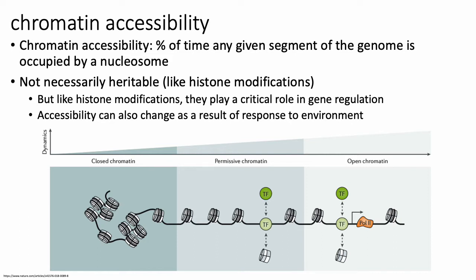On one end of the spectrum, chromatin can be in a completely closed state; on the other, completely open and free of nucleosomes and ready for, for example, Pol II binding or TF binding. In a permissive chromatin state, chromatin can be open just enough such that key subsets of transcription factors — typically called pioneer factors or pioneer TFs — may be able to bind to regions partially occupied by nucleosomes and therefore recruit chromatin remodelers to either displace nucleosomes or enhance their binding at that particular region.